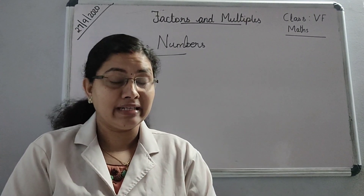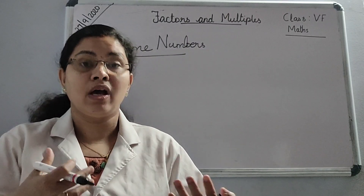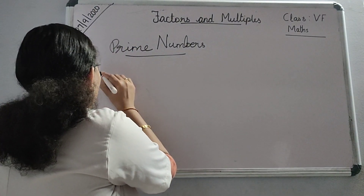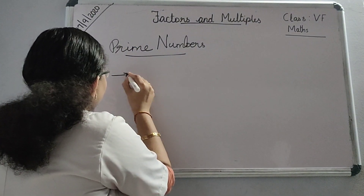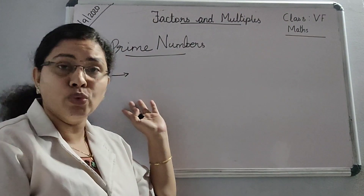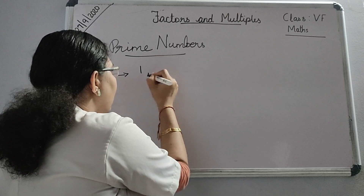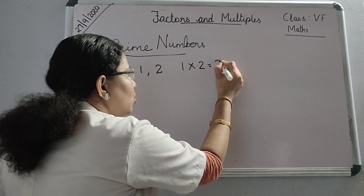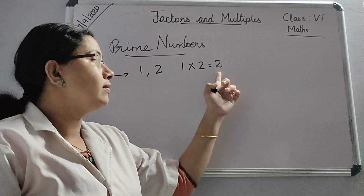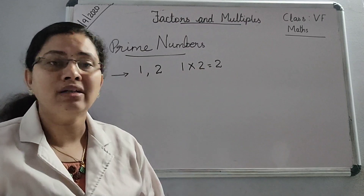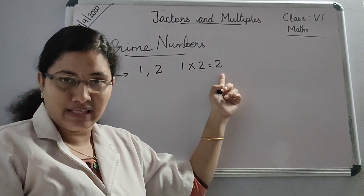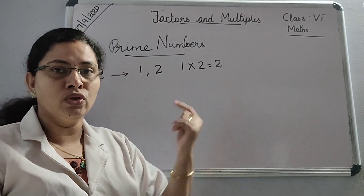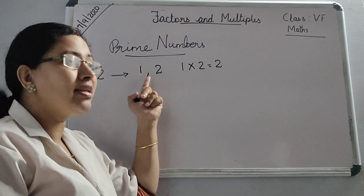We have already discussed what are factors. For the number 2, what are the factors of number 2? 1 and 2. Because 1 when multiplied with 2, we will be getting 2. So 1 and 2 are the factors of 2. There are no other factors — only these 2 factors: 1 and 2.